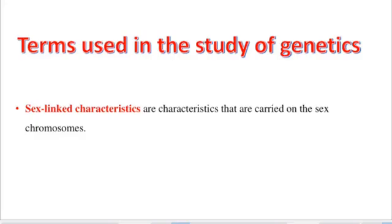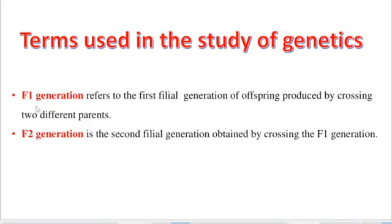We have what we call F1 generation — the first filial generation. The first filial generation refers to the first generation of offspring produced by crossing two different parents. If we then cross using the F1 generation offspring to make another cross, we call that the F2 generation — the second filial generation, which is the second generation obtained by crossing the F1 generation.